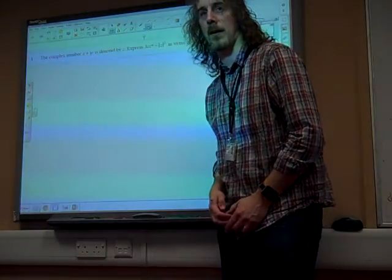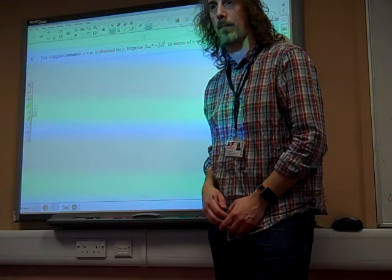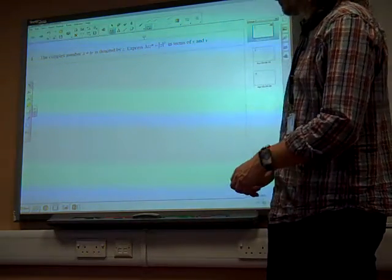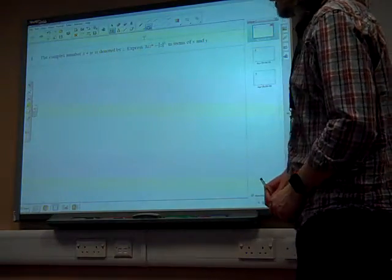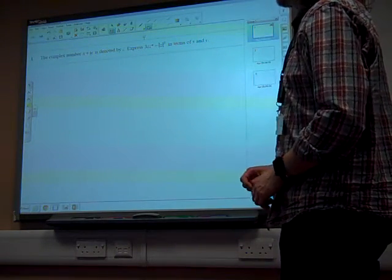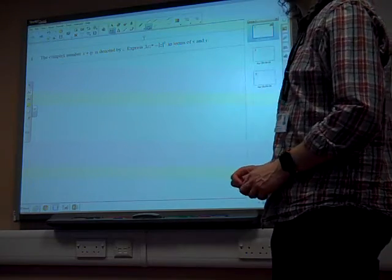FP1 2015 summer OCR exam. The complex number X plus IY is denoted by Z. Express 3ZZ star minus the modulus of Z squared in terms of X and Y.